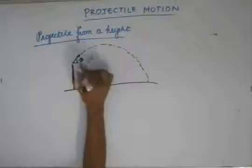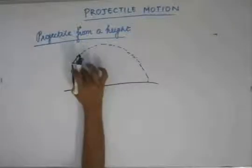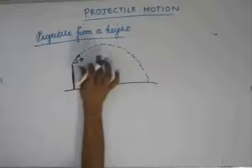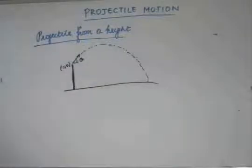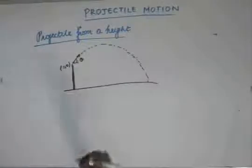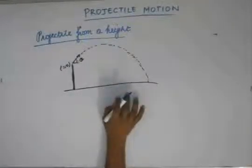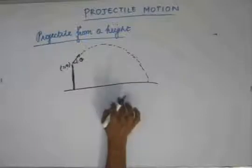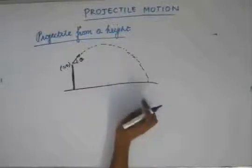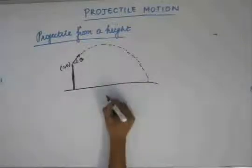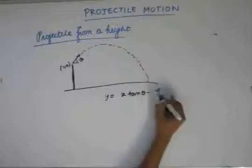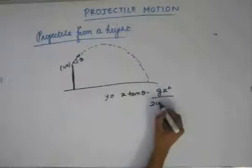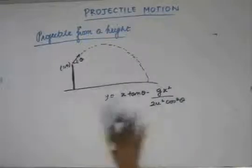In this case also the force acting will be only the gravitational force which will be acting downward. In the horizontal direction there is no force. The point of projection we choose as origin. In this case also the equation of projectile remains the same: y equals x tan θ minus g x² / (2u² cos² θ). This is the equation of trajectory.